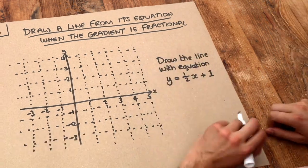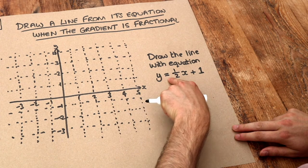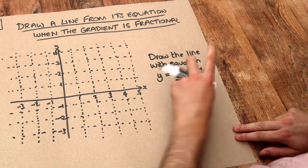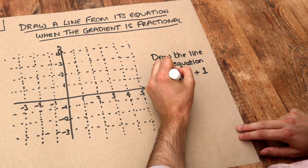The basic form of the equation of a straight line is y equals something x plus something, and that number in front of the x is known as the gradient.